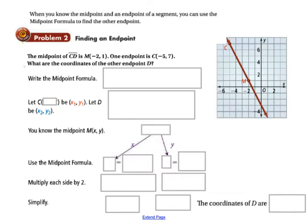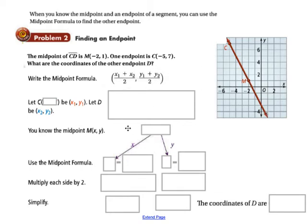When we know the midpoint and one endpoint of a segment, we can use the midpoint formula to find the other endpoint. In this example, the midpoint M of segment CD is (negative 2, 1), and one endpoint C is (negative 5, 7). We want to find the coordinates of the other endpoint D. The midpoint formula is: the sum of x-coordinates divided by 2 and the sum of y-coordinates divided by 2.